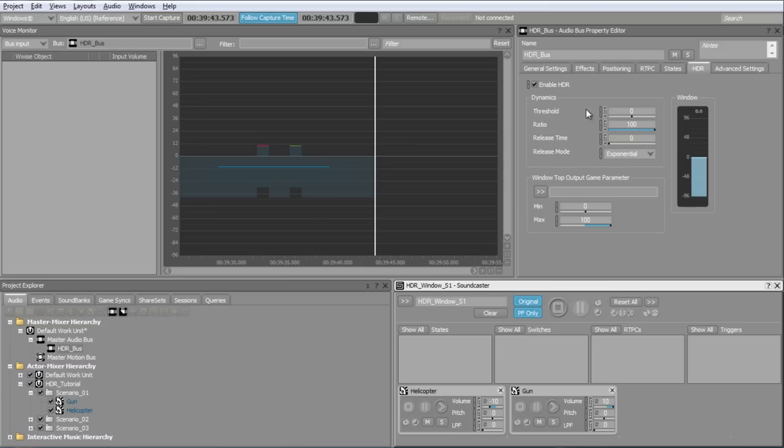Now, let's have a look at the HDR settings for the bus. The threshold is the first parameter in the Dynamics Group Box. It operates in the same fashion as any audio compressor or limiter effect by defining the input level above which the HDR window starts moving. Note that changing the threshold from its default value of 0 dB preserves the dynamic range set in the project settings.